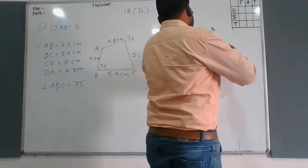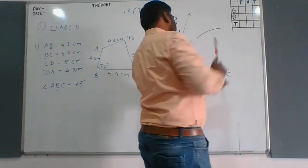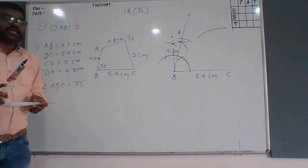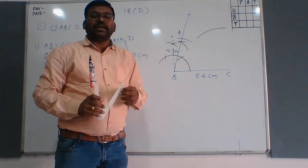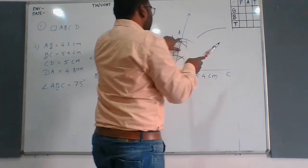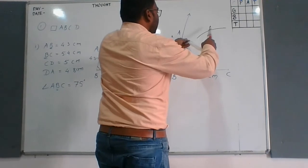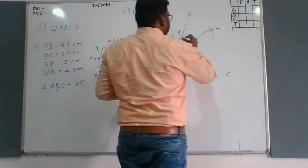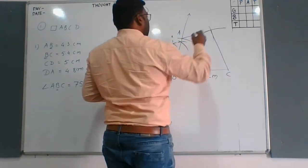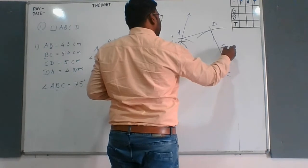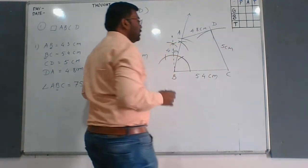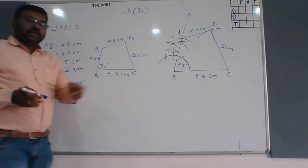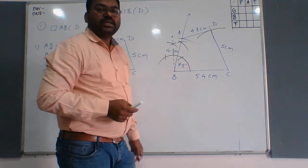Mark the 5 cm distance as CD from point C. Then AD is 4.8 cm, so from point A take a radius of 4.8 cm and cut an arc. The intersection gives us point D — it is 5 cm from C and 4.8 cm from A. Join all the vertices. This angle is 75 degrees, and our quadrilateral ABCD is completed.